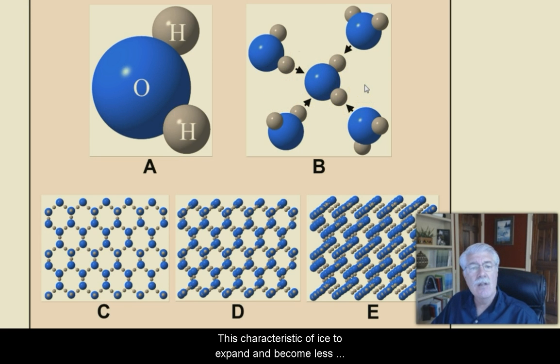In B, as water freezes, water molecules align into a regular structure. In C, D, and E, as ice is formed, it expands in size, but it becomes less dense than liquid water.